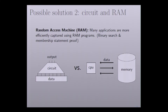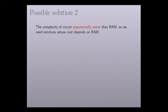In the real world, many applications are more efficiently captured by using a RAM program, such as binary search and membership statement proofs. If we use the circuit solution, we need to touch every bit of all data, which makes the circuit size linear in the size of the data and also makes the running time linear. But in the RAM program, we only need to touch the data that will be used, which means the RAM program can be sublinear in the size of the data. The complexity of the circuit can be exponentially worse than the RAM program.